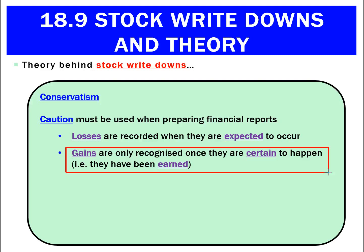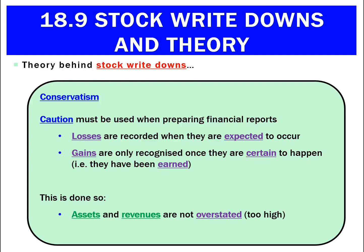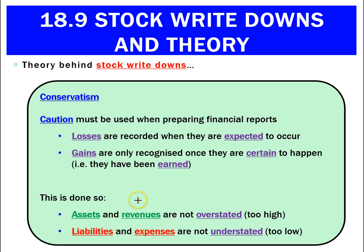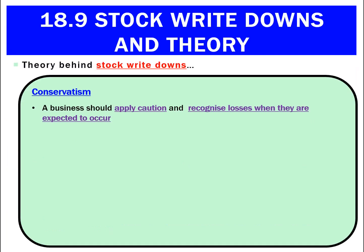We need to flush out our answer a little bit and make it more detailed. Conservatism has this second part of the definition: be conservative, so we never overstate assets or revenues, and we never understate liabilities or expenses. What we're doing here with the stock write-down is making sure an asset called stock is not too high, and we're also making sure our expenses are not too low because we're recognizing a new expense called stock write-down. So that's all to do with conservatism.